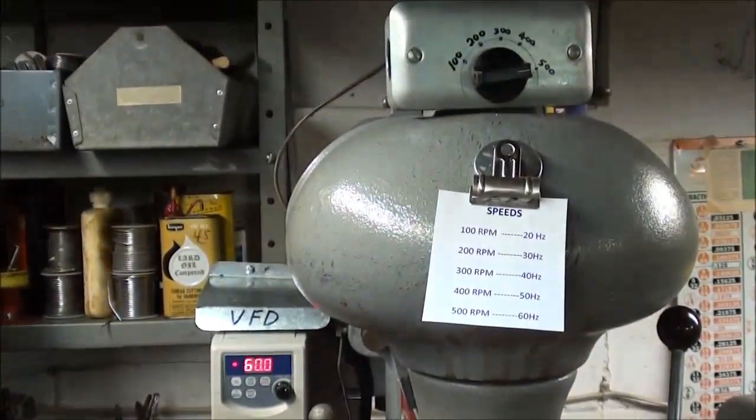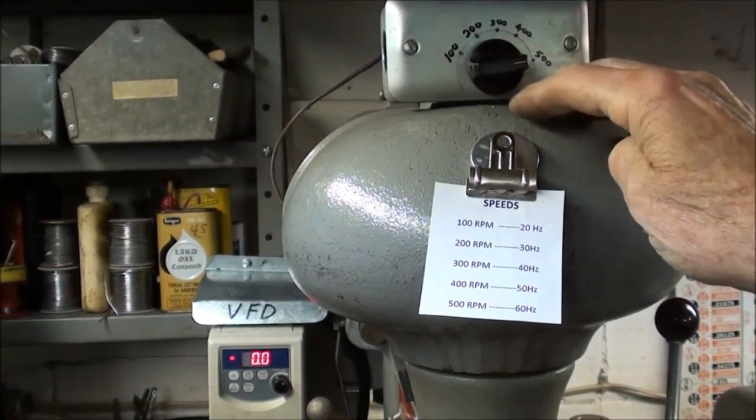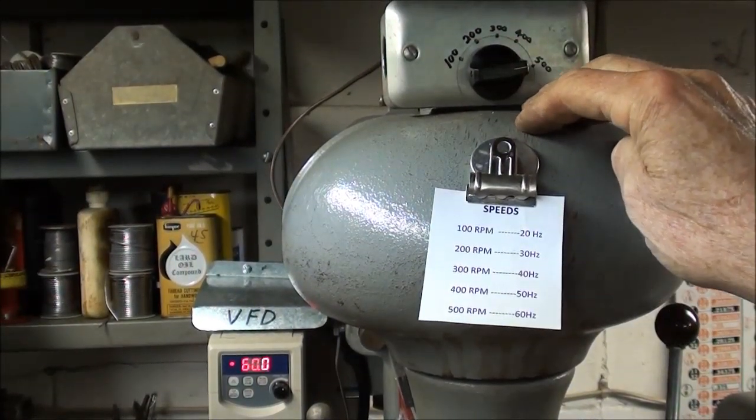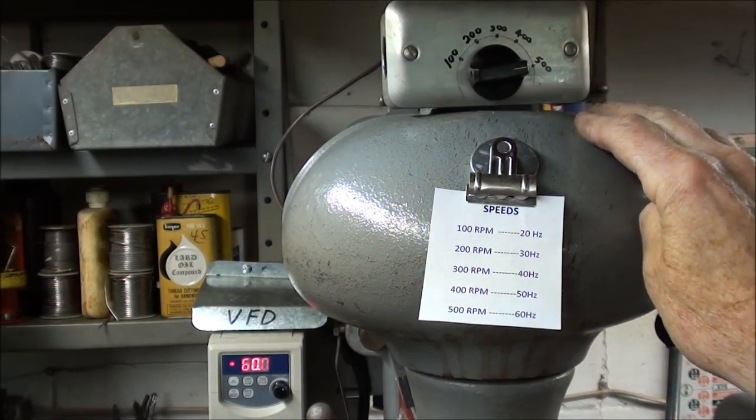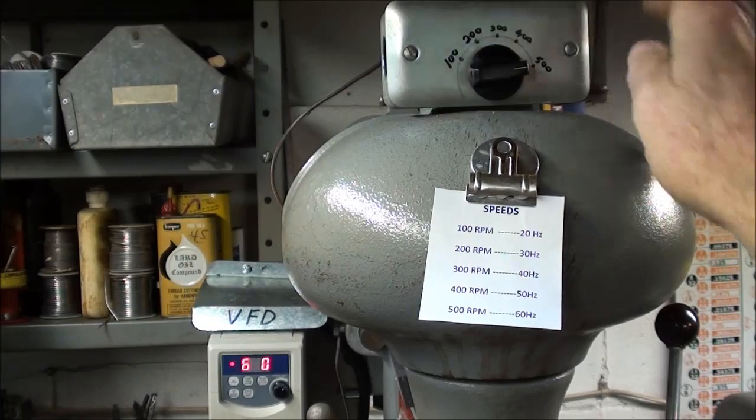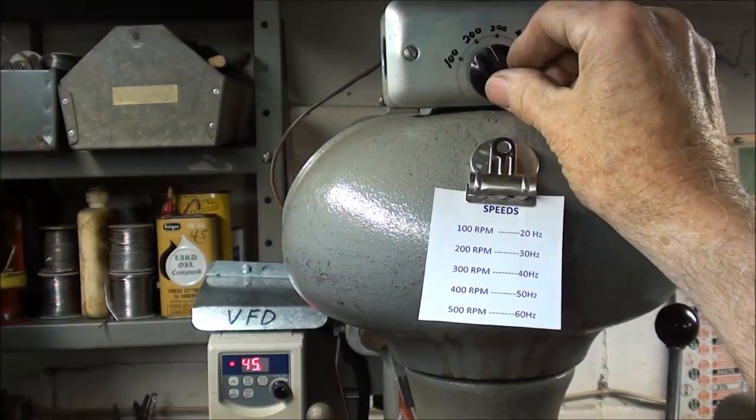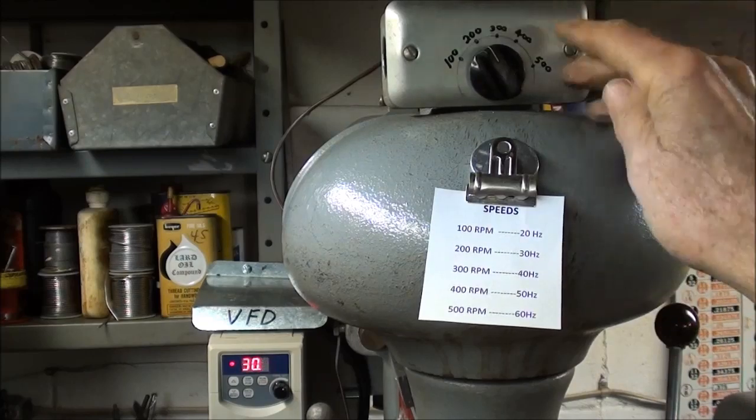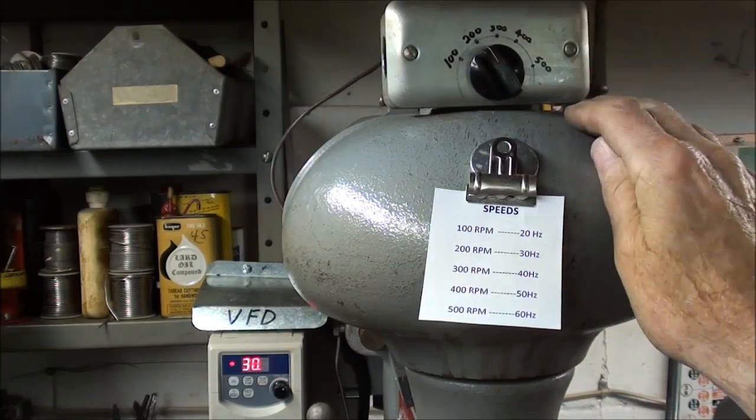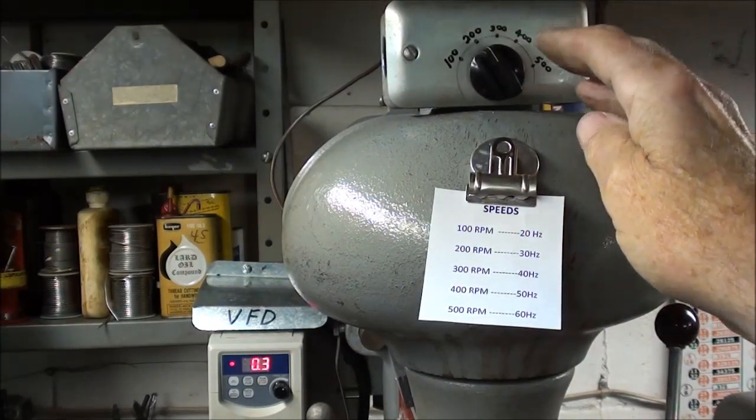Now, if you didn't see the last video where I did all the calibration with the tachometer to change, basically, the Hertz to RPM, take a look at that. So that's Tubalcane's speed control. Basically, I do not have to look at the VFD. I just look at this, and I've got my speed in the ballpark.